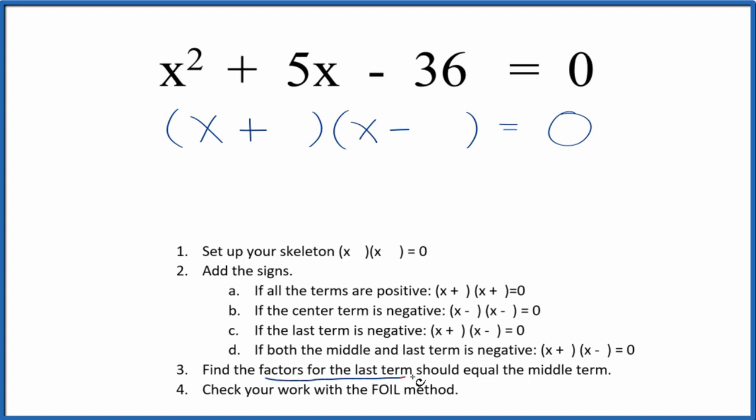Now we can find the factors for the last term, that's the negative 36. And if we add them together, we want to get the middle term, that's the 5.